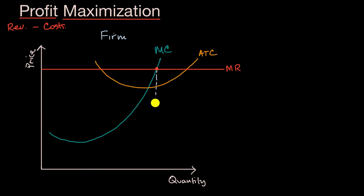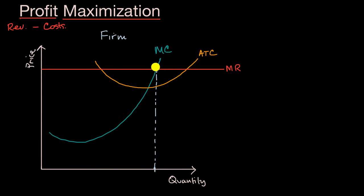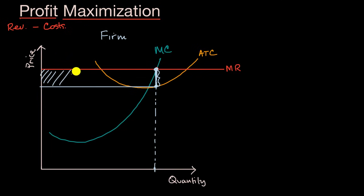It will produce this quantity right over here. A natural question might be: how much profit will it make from producing that quantity? All you have to do is think about the marginal revenue it gets — and because this is constant, it's also going to be the average revenue per unit. This right over here is the average total cost per unit. So you take the difference between average revenue and average total cost per unit, and multiply that times the number of units, and what you get is the area of this rectangle.